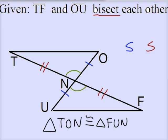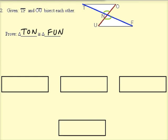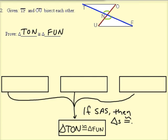And vertical angles are always congruent. And so therefore, we're going to prove that these two triangles are congruent using the side-angle-side theorem. So let's get started. We know what it is we want to prove. We want to prove that triangles TON and FUN are congruent.